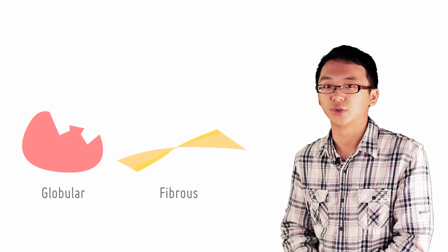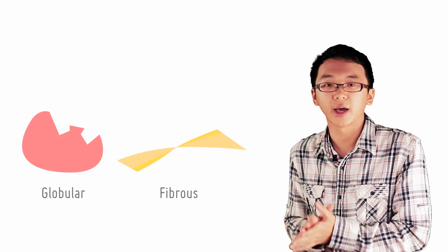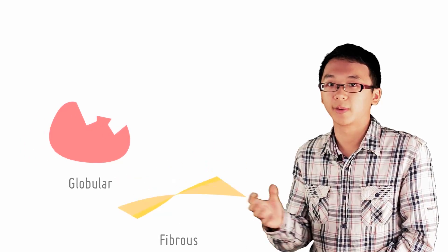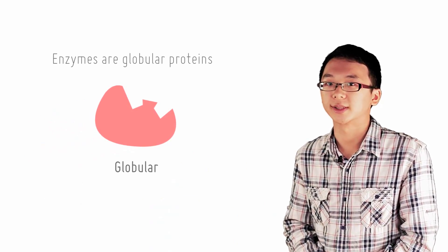Proteins are usually categorized into two categories: globular and fibrous. Enzymes belong in the globular form of proteins. But why?